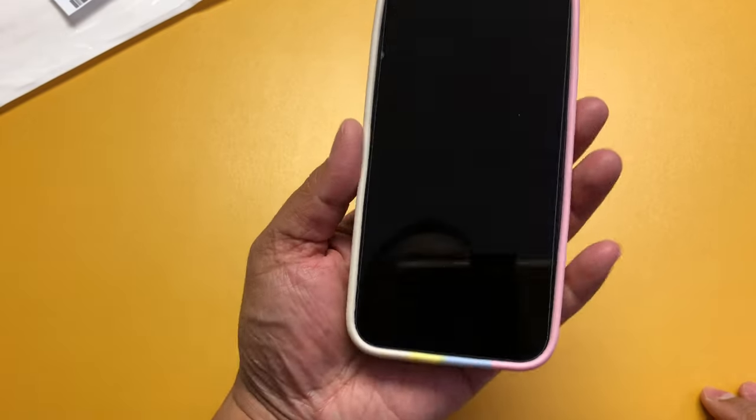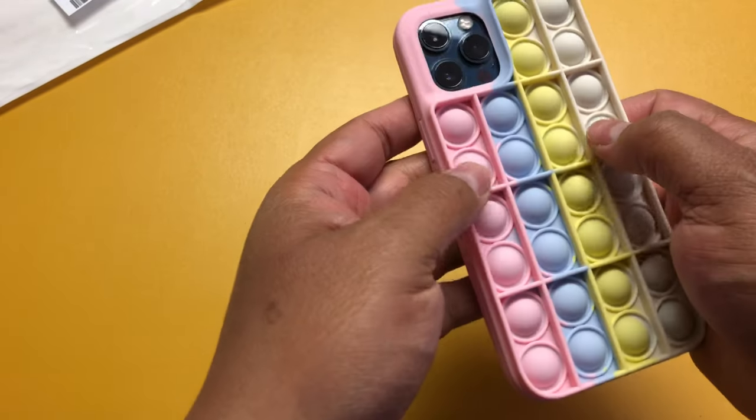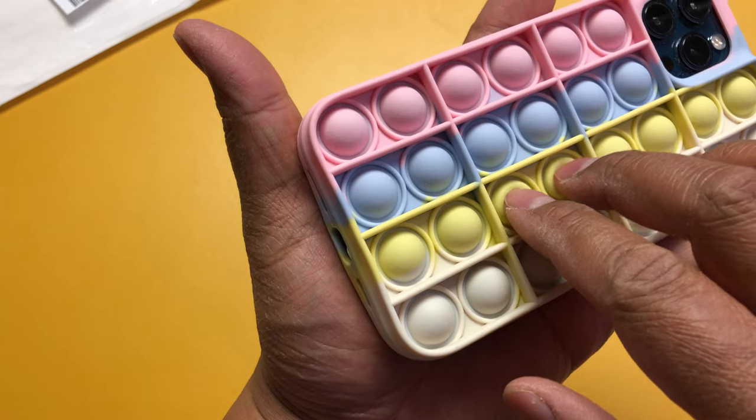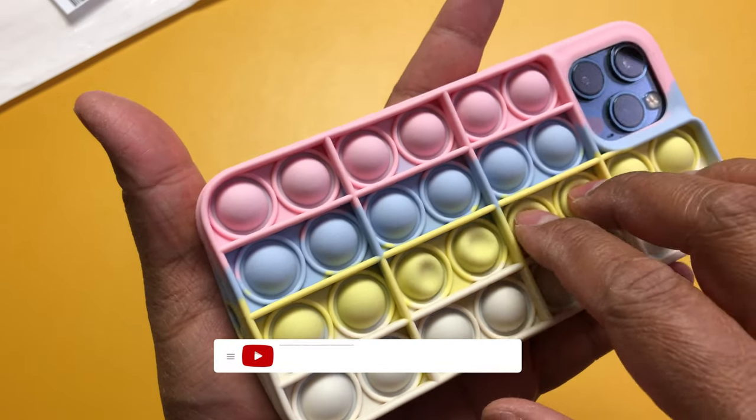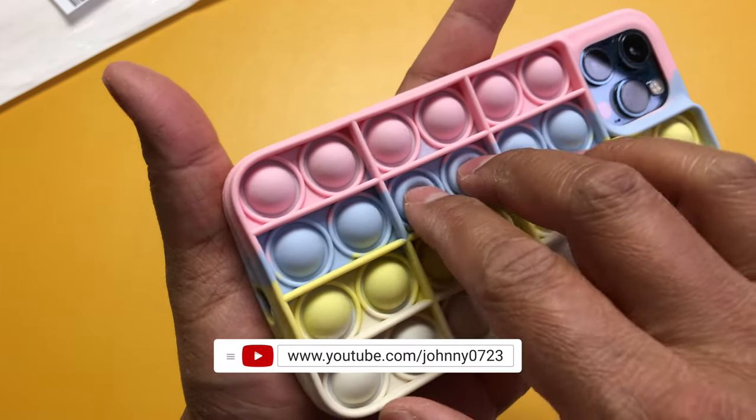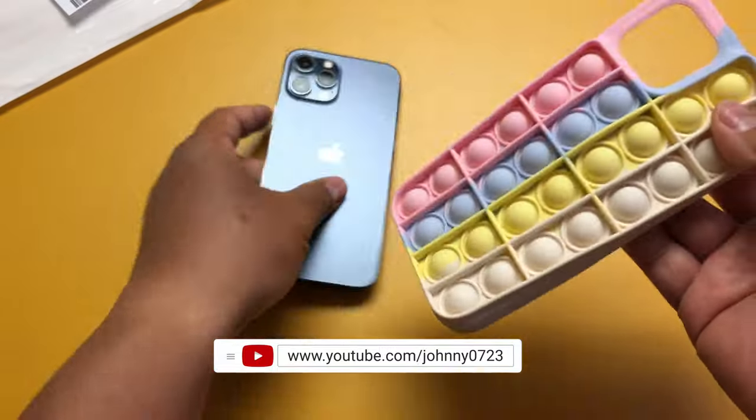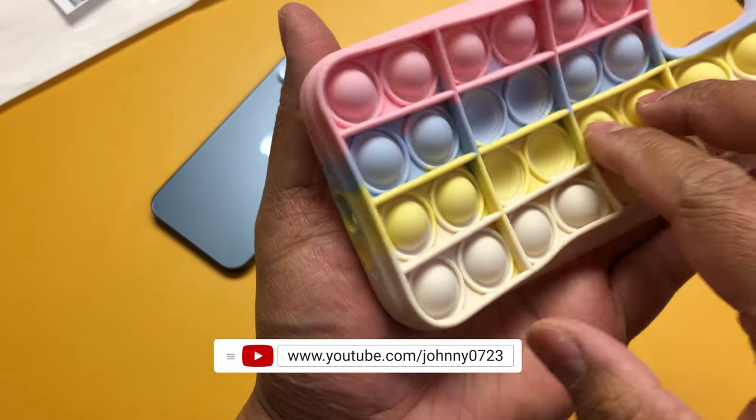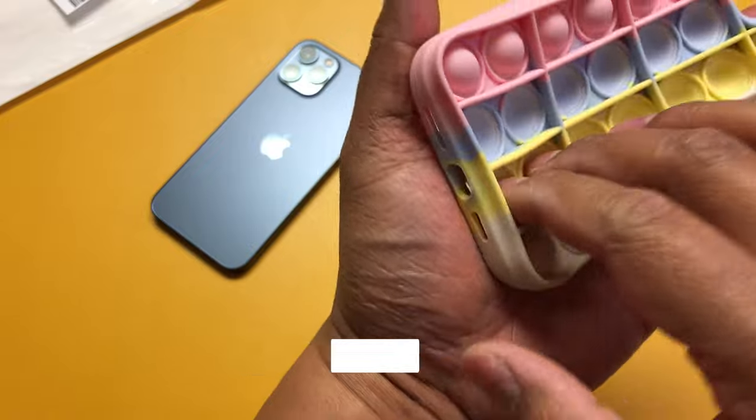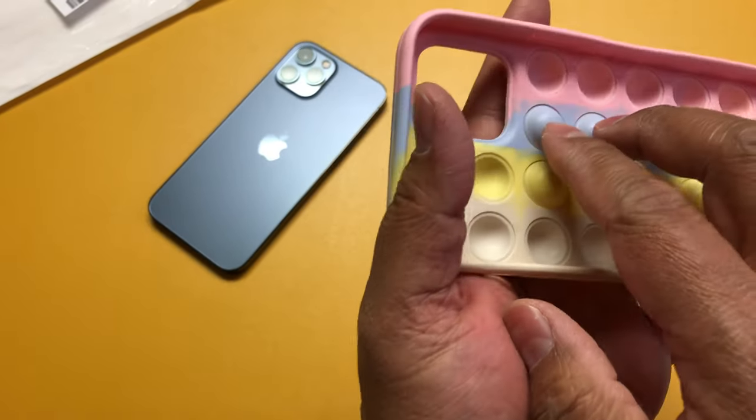But the cutouts are even and this is what it looks like and you want to pop. It doesn't work with the phone on so it's meant to be taken off of it and as you can see that was pretty easy to take on and off and then you can play with it.